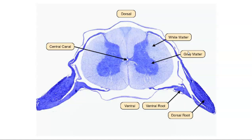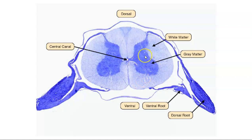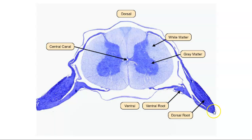Here's a slide preparation showing all the same things. We see the central canal filled with cerebrospinal fluid, the gray matter, the white matter, the anterior horn, the lateral horn, the posterior horn. This is the dorsal root, here's the dorsal root ganglion, here's the anterior or ventral root, and that comes together here to make the spinal nerve.